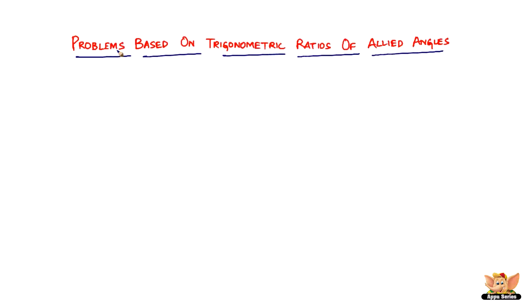In this video, let us continue to solve problems based on trigonometric ratios of allied angles. Here we've got a problem which says prove that cos 510° × cos 330° + sin 390° × cos 120° = -1.